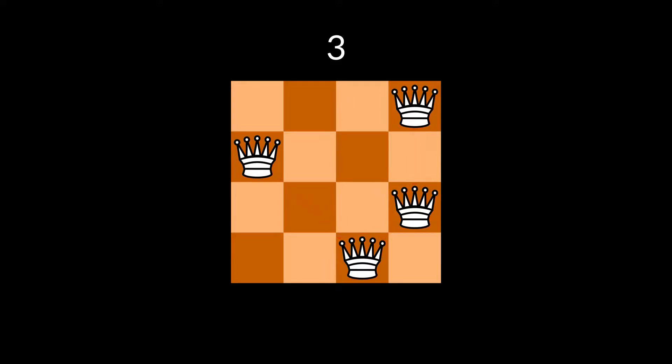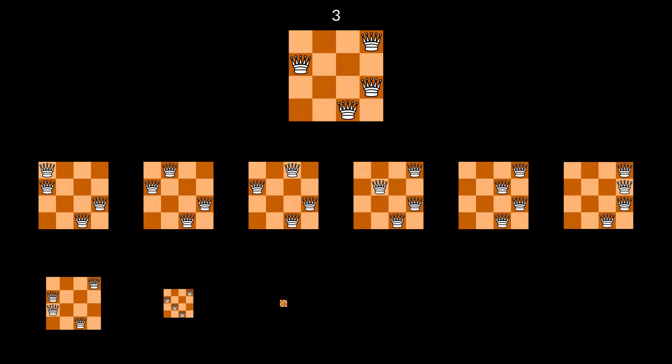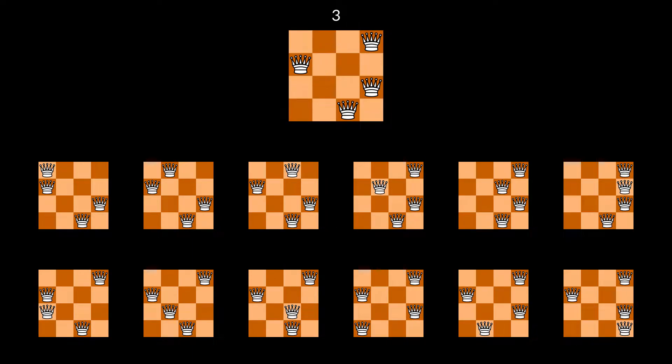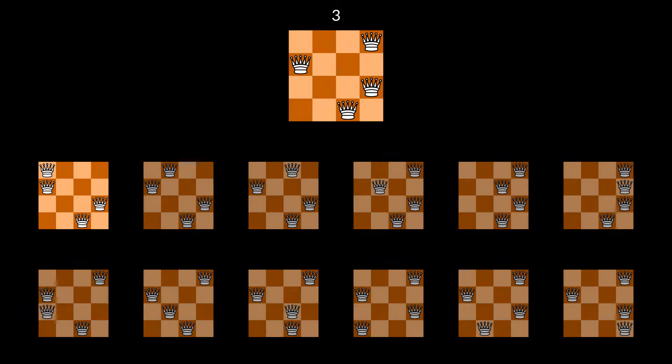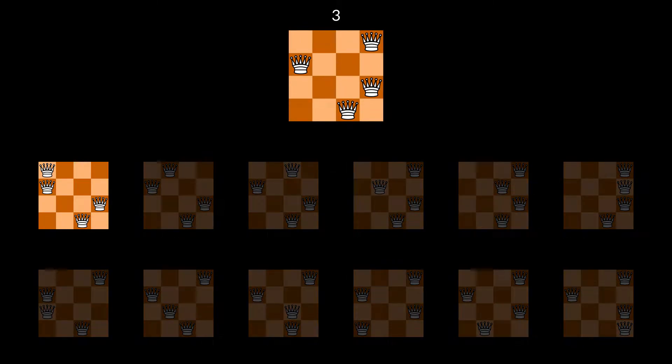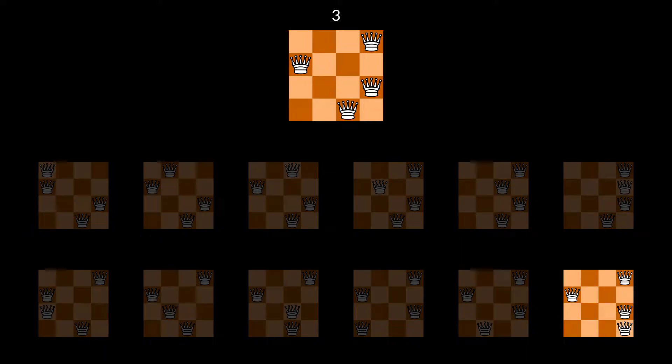The algorithm will try every way of moving a single queen to a different column. Each move results in a new state, as you can see here. This state, for example, is obtained by moving the queen in the top row to the leftmost column. And this one is the result of moving the queen in the bottom row to the rightmost column.